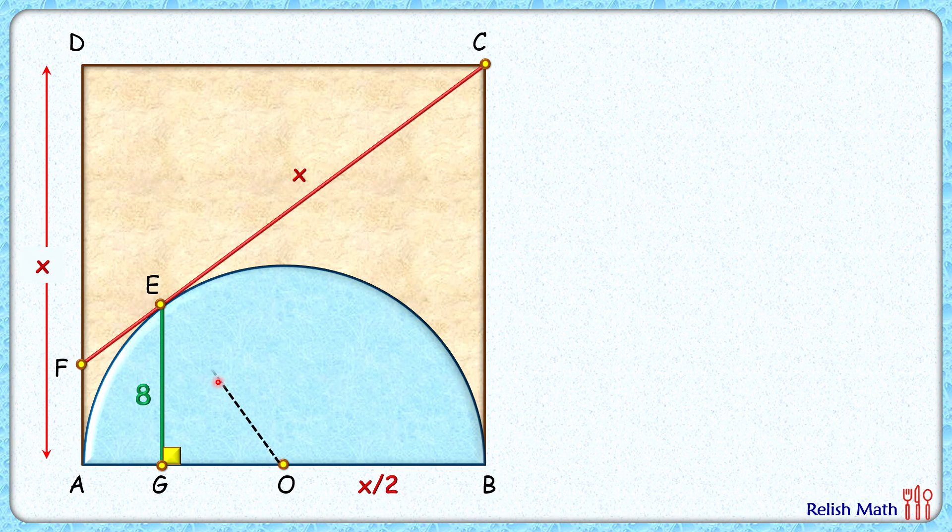Let's join OE. Here we know that the tangent is perpendicular to the radius, thus angle E is 90 degrees and OE length that's the radius of the semicircle is x by 2 centimeters. From point E let's drop a perpendicular on BC.